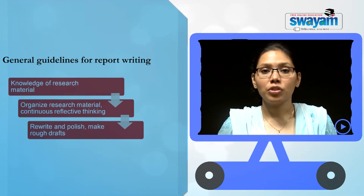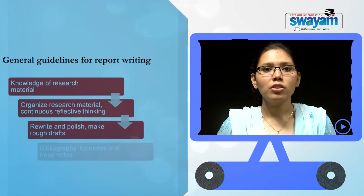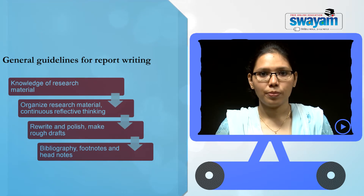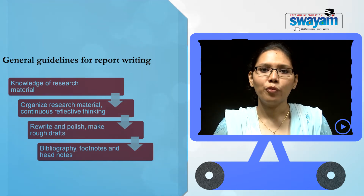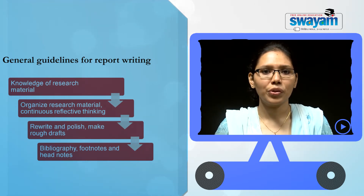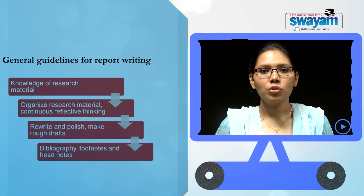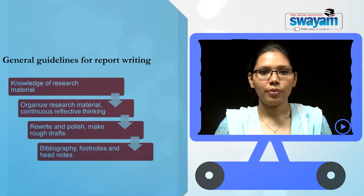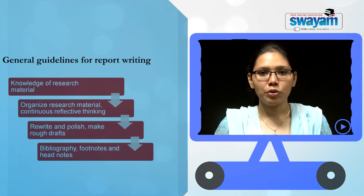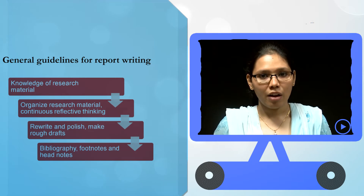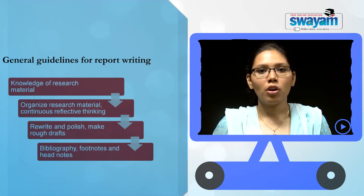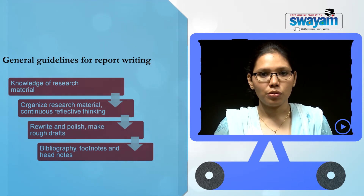Another guideline is footnoting and headnotes. The researcher must, wherever citing another author's work, make due footnotes or endnotes to add authenticity and reference to the report. There are various methods of writing bibliography and footnotes, like the Bluebook method, which is basically from the Harvard school, and the OSCOLA method, which is of the Oxford school.